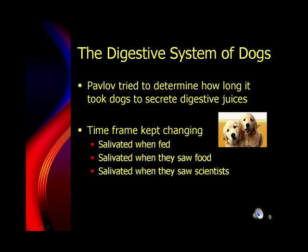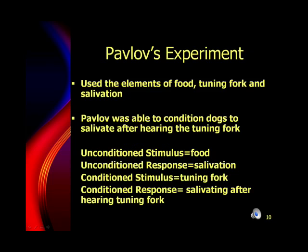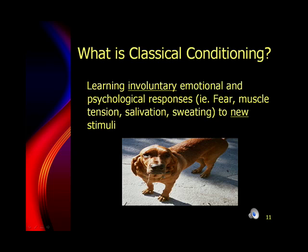He was trying to determine how long it took dogs to secrete digestive juices, and what he noted was that the time frame kept changing. Pavlov's now famous experiment involved using food and a tuning fork to control the salivation of dogs. He was able to condition dogs to salivate after hearing the tuning fork. His theory of classical conditioning related to the fact that you could learn involuntary responses to a new stimuli.